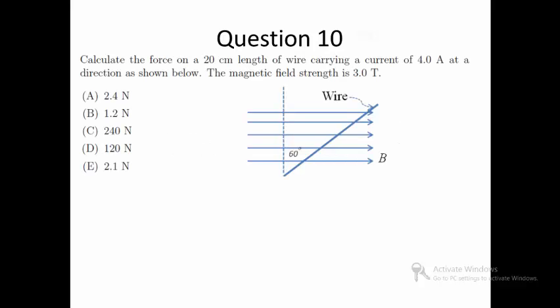Question 10: Calculate the force on a 20 centimeter length of wire carrying a current of 4 ampere at a direction as shown below. The magnetic field strength is 3 Tesla. In this question, the wire is not perpendicular to the magnetic field.